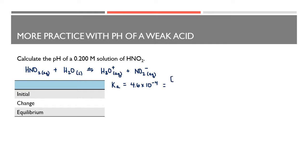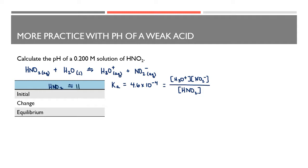Just keep in mind that every table is a little different as far as significant digits and rounding are concerned, and some values may differ because they were taken at different temperatures or in a different environment. So don't think that a slightly different Ka value on your table means it's wrong. This is our equilibrium constant expression, and then I'm going to include all of the necessary ingredients in my ICE table.